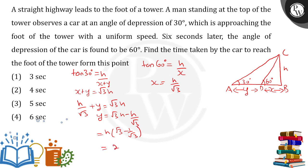So y comes out to be 2h upon root 3. Since x = h upon root 3, we get y = 2 times x. So the relation between x and y is: y equals 2x.